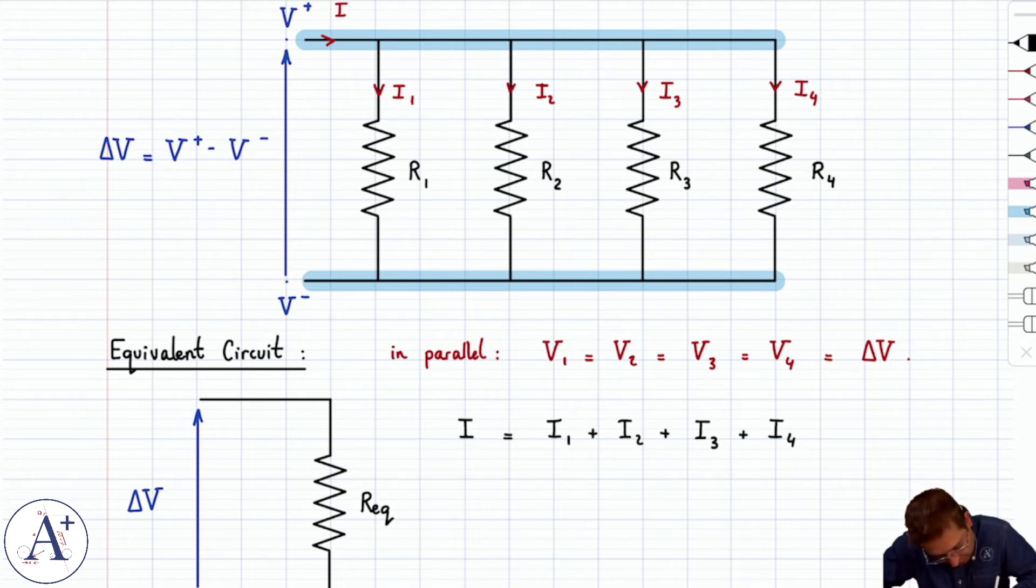Now if I substitute Ohm's law in here, what do I get? Well, I here is going to be split into these four currents, and each current goes through resistors. So for each current,